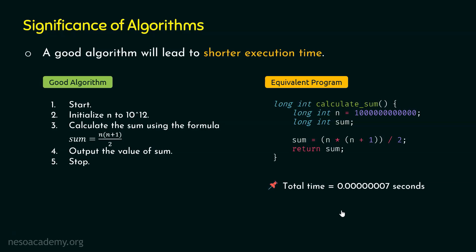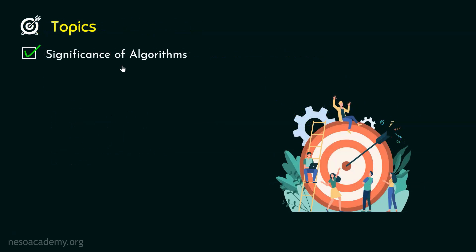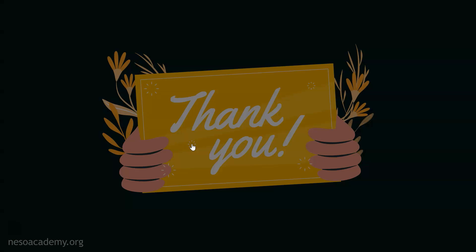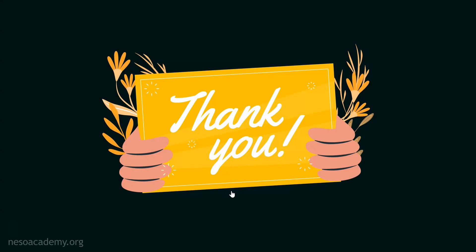Clearly, a good algorithm leads to shorter execution time, so we must always try to write good algorithms. This is why analysis of algorithms is needed — there can be multiple algorithms to solve a problem, and we need to analyze them to determine which is good and how much time they will take. I hope the significance of a good algorithm is now clear. Thank you for watching.